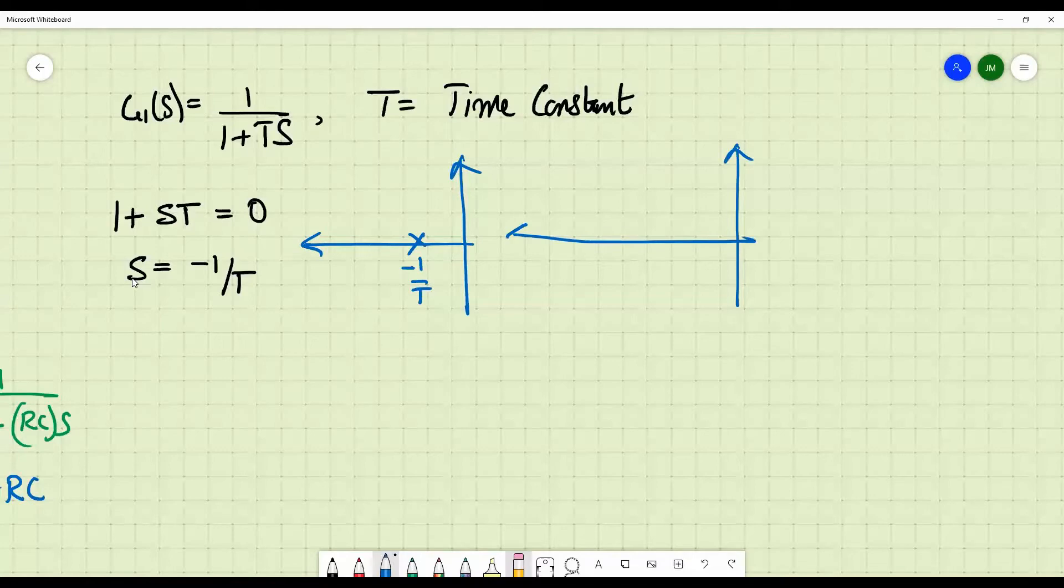So this particular system, this is example 1 and this is example 2. In example 1, the pole is very near the j omega axis and in example 2, the pole is quite far away from the j omega axis. So in which case will the value of capital T be high? Is it in this case or is it in this case? In which case will the value of capital T be very high?